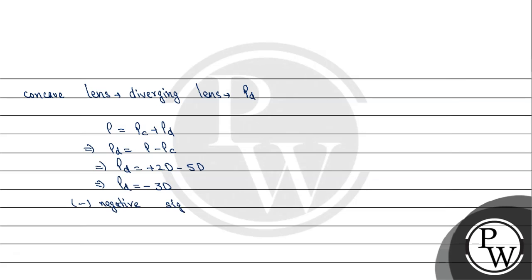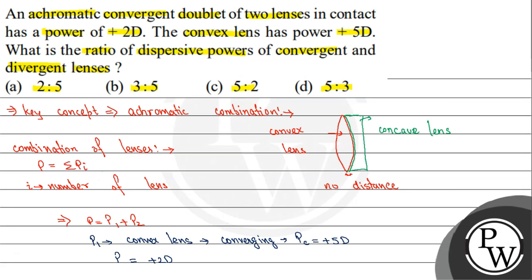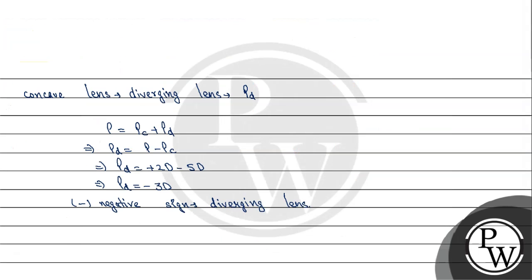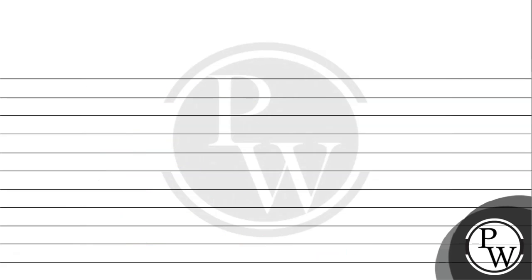The negative sign represents that we are talking about the power of a diverging lens. Now, what we need to find in this question is the ratio of dispersive powers of convergent to divergent lenses. For an achromatic doublet, the condition is: ω1/F1 + ω2/F2 = 0. Here F1 and F2 are the focal lengths.